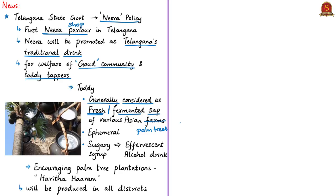Toddy is ephemeral — it lasts only for a short time. The sap will remain unchanged only for some hours; within a few hours of collection it starts undergoing fermentation. Initially the sap is a sugary syrup, and after some hours it transforms into an effervescent alcoholic drink — effervescent meaning having bubbles or froth.